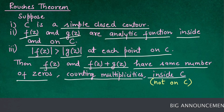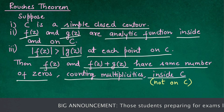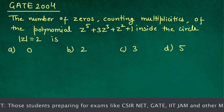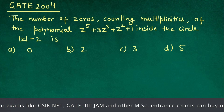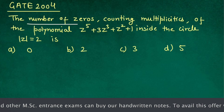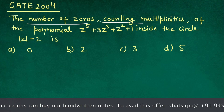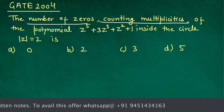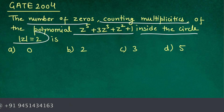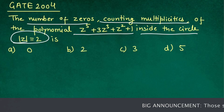Rouché's theorem can help us determine the number of zeros of any analytic function inside some domain. Let us see an example. This question appeared in the GATE exam 2004. We have to determine the number of zeros, counting multiplicities, of the given polynomial inside the contour — the circle with modulus of z equals 2.